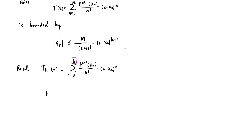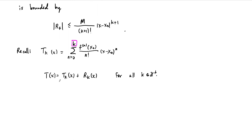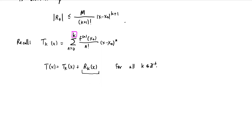The Taylor series itself, t of x, is equal to this partial sum t sub k of x plus the remainder — which is the tail of the series — for any k. So the idea is that if we want to make sure that our function f equals its Taylor series, we have to show that as k gets bigger, this remainder term gets smaller. It goes to 0, in fact. So the tail should go to 0.